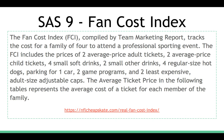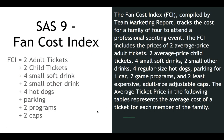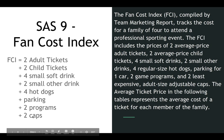The average ticket price in the following tables represents the average cost of a ticket for each member of the family. We found this on the website nflcheapskate.com real fan cost index. FCI equals two adult tickets plus two child tickets plus four small soft drinks plus two small other drinks plus four hot dogs plus cost of parking, two programs, and two caps. To make this easier, the two adult tickets and two child tickets are combined into four average tickets.